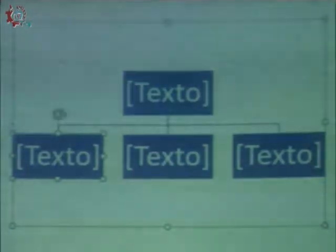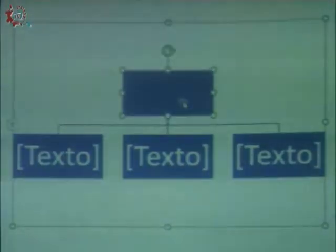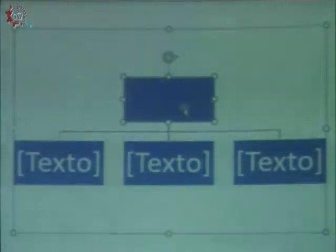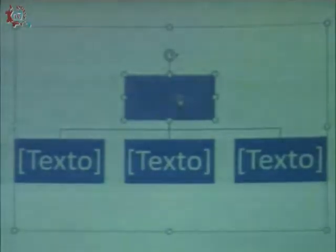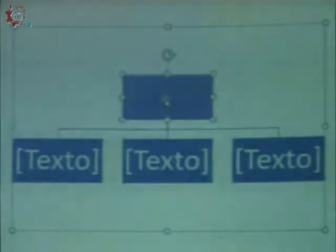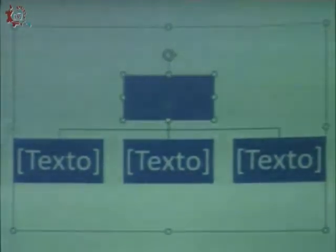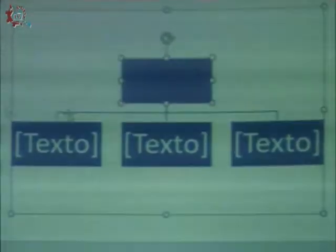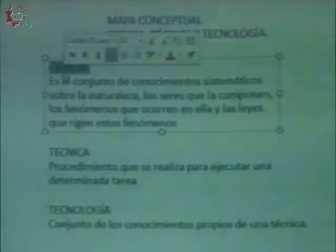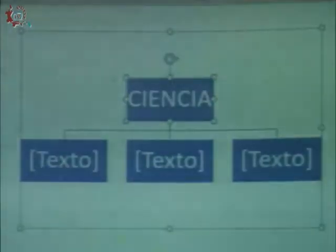En este caso, yo ya puedo ir escribiendo dentro de los recuadros con el simple hecho de dar clic. Vean cómo se borra el texto previo y aparece el indicador listo para que ustedes puedan escribir dentro de cada uno de los recuadros. También pueden seleccionar texto previamente escrito, copiarlo, dar clic en el recuadro y pegar el texto — eso es lo que también pueden hacer ustedes.